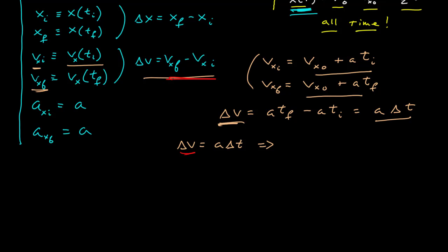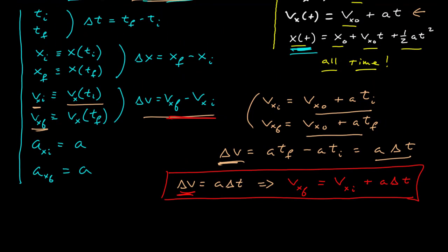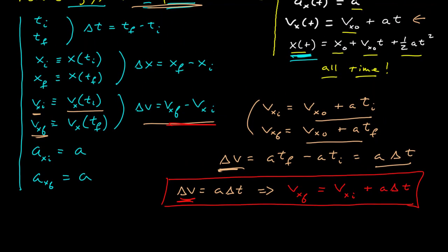If I put in the actual final and initial velocities, I get the final velocity equals the initial velocity plus a times delta t. You can see where a lot of the confusion comes from, because this expression looks very similar to the general velocity function, but they're not the same. This is a function for all time, while this is a relationship between two specific velocities evaluated at two specific points in time. Here t is an independent variable, while delta t is a time interval — the difference between two specific points. They're not the same thing at all, so keep that in mind.